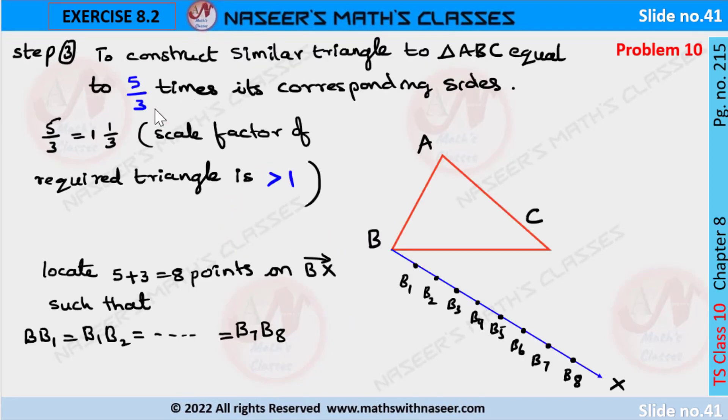According to the given problem, we have to construct a triangle similar to triangle ABC whose sides are 5/3 times of the corresponding sides of the triangle ABC. Here 5/3 is equal to 1 and 2/3, means the scale factor of the required triangle is greater than 1.